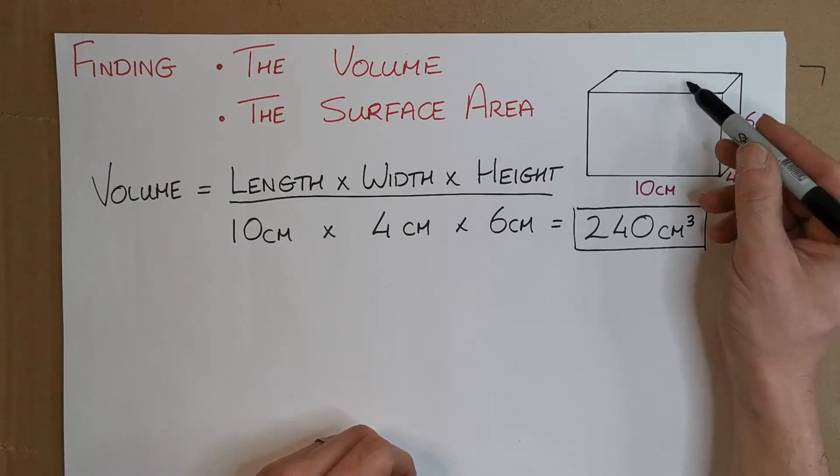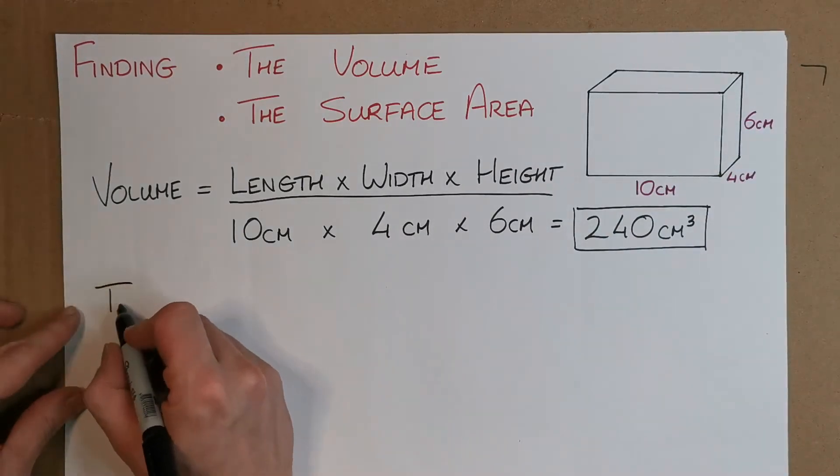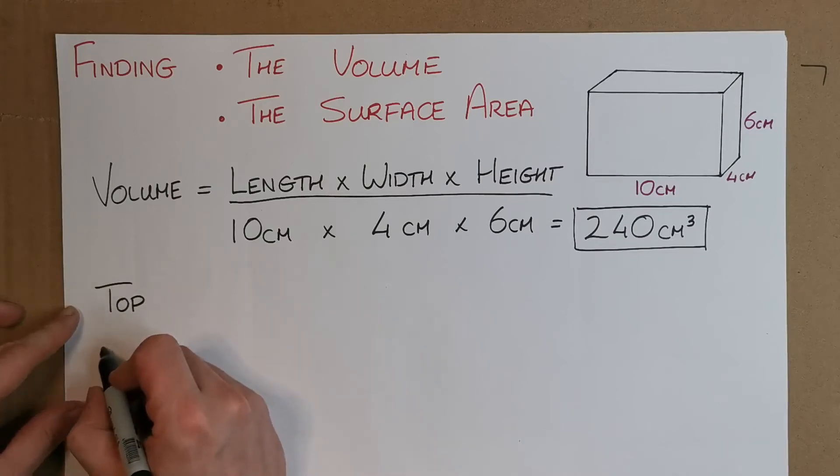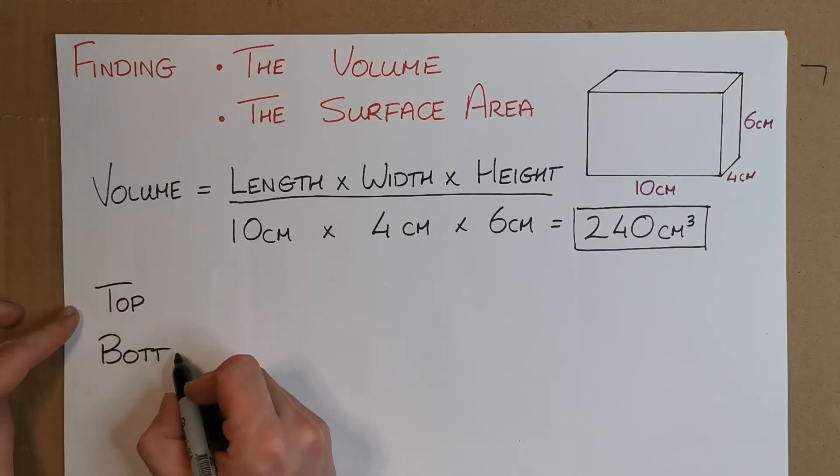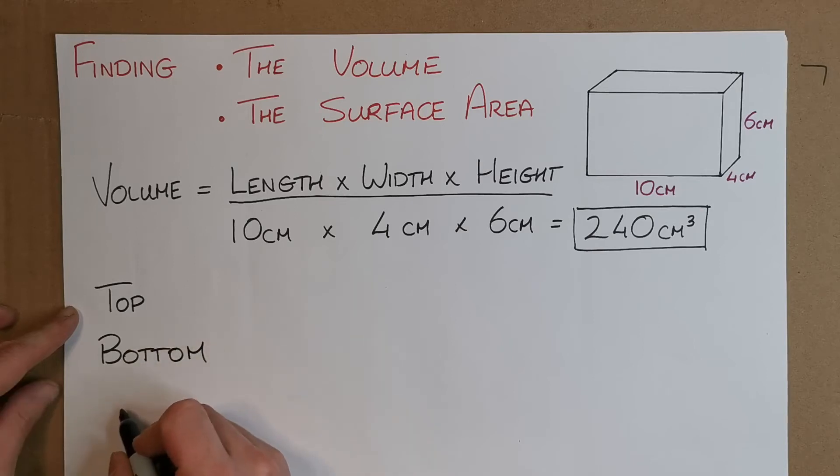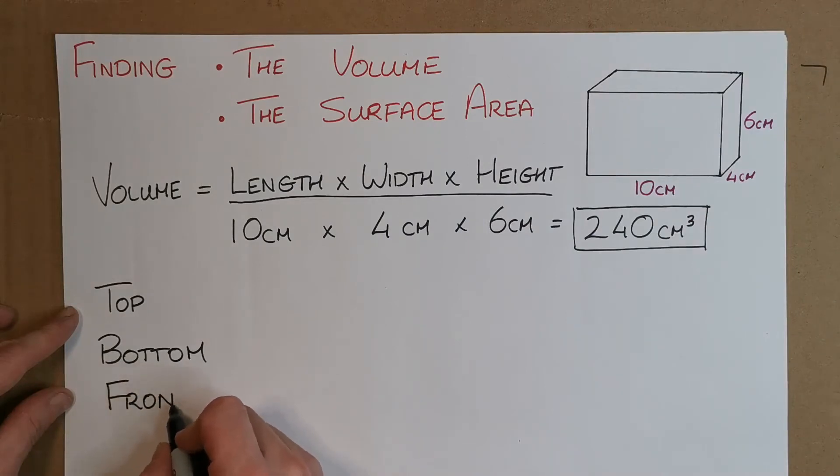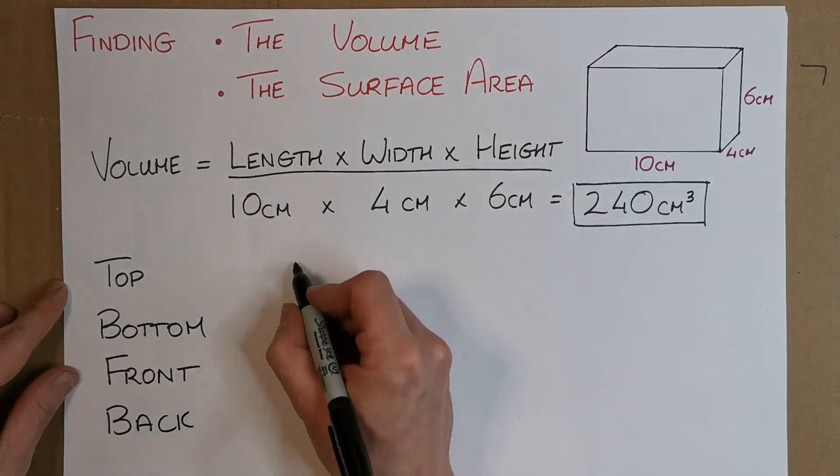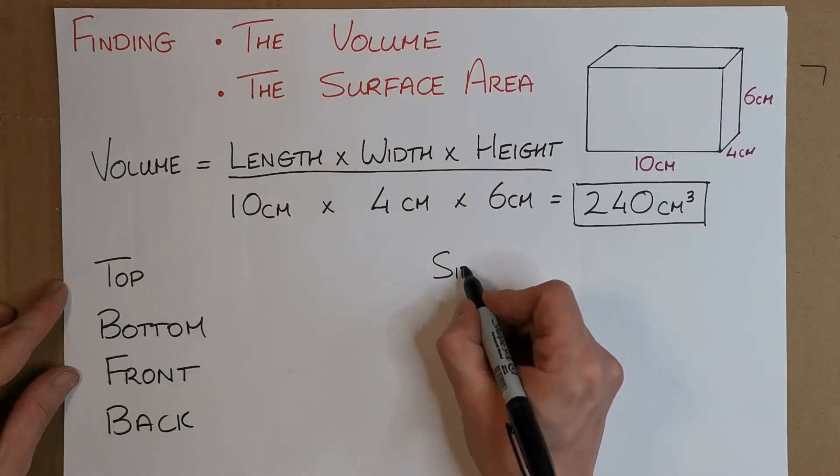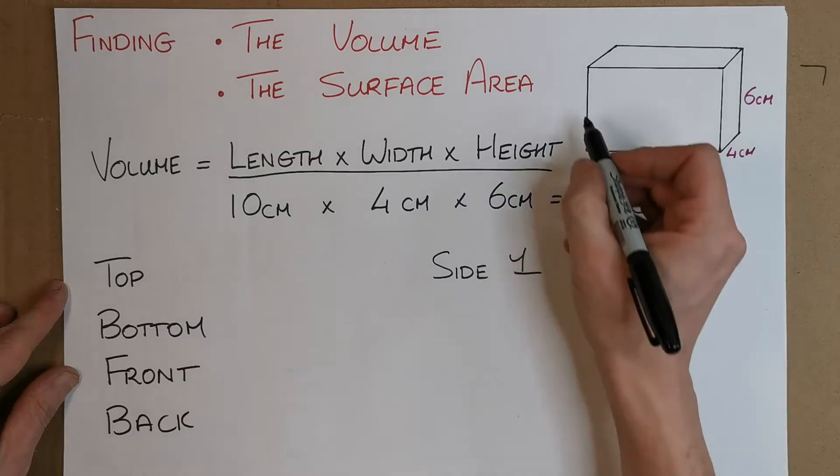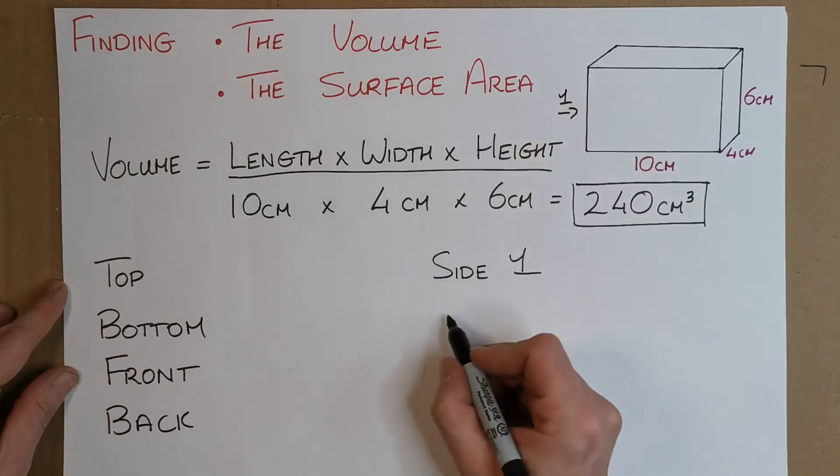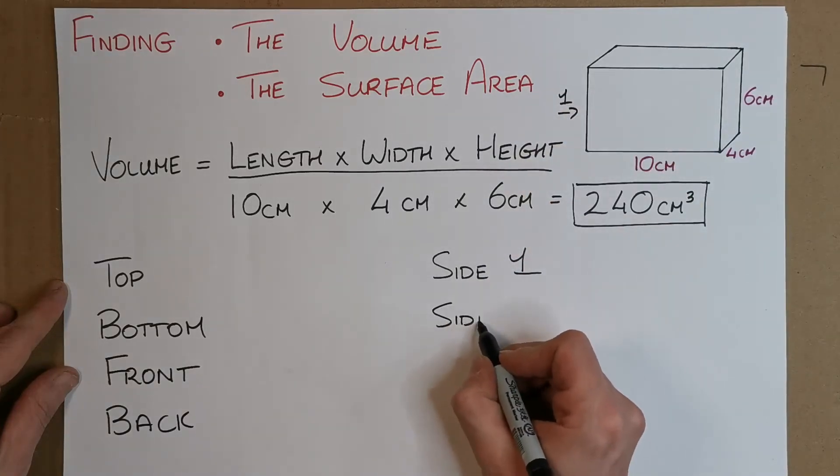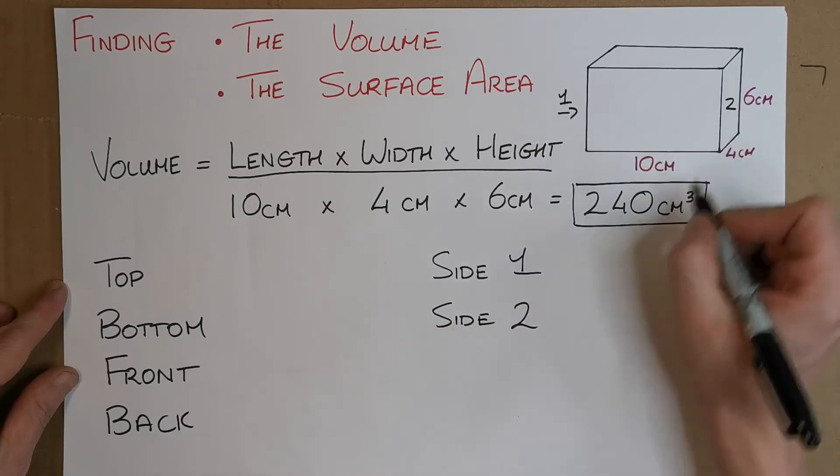So let's think about that. We have the top and bottom. We also have the front and the back, which you can't see. And let's also say then we have the two sides, right? So let's say side one, and we'll call this side one here, and we'll say side two, and this being side two here.